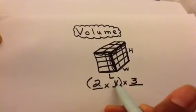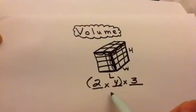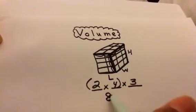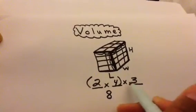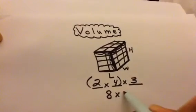Two times four equals eight. And now I'm going to multiply the last number, which is three.